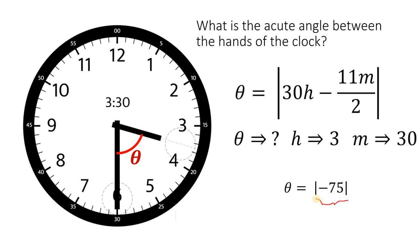Take note that we need to get the absolute value of negative 75. The absolute value of negative 75 is 75. Therefore, the angle between the hands of the clock that shows 3:30 is 75 degrees. And as always, we are done.